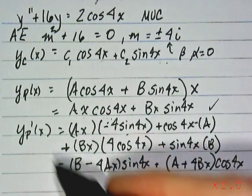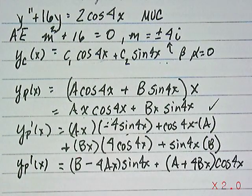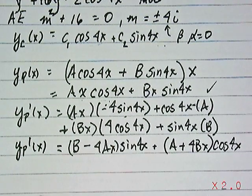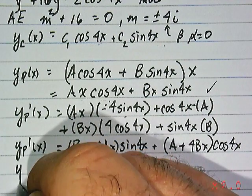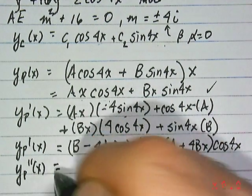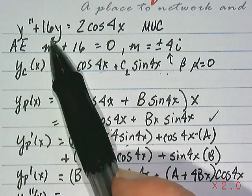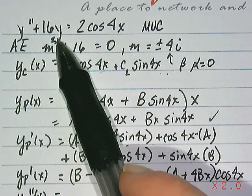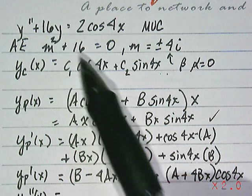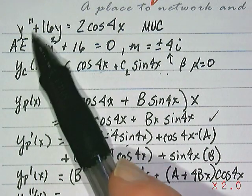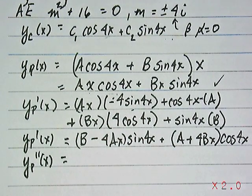So what we'll have is A plus 4Bx quantity times cosine 4x. So all I've done is rewritten the derivative, first derivative of our particular solution, so it might be a little bit easier to compute the second derivative. So we'll go ahead and do that now. Why are we computing the second derivative? Well, because we are going to plug in our particular solution into the left-hand side of differential equation. We know what our particular solution form is. We have it right here, but we need that second derivative of it.